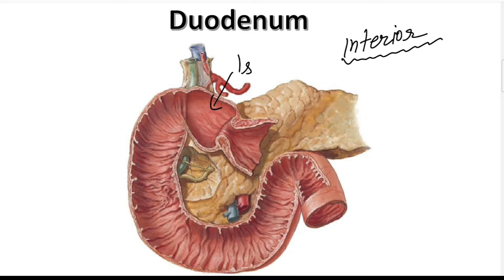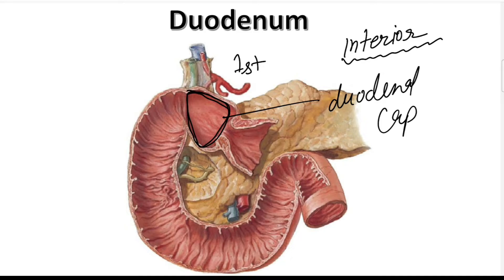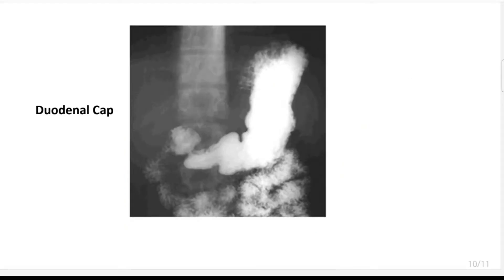The first part of the duodenum is smooth. On a barium meal X-ray of the abdomen, the first part presents as a triangular shadow or triangular bulge, known as the duodenal cap. You can identify the duodenal cap in this picture — this triangular area is the first smooth part of the duodenum.